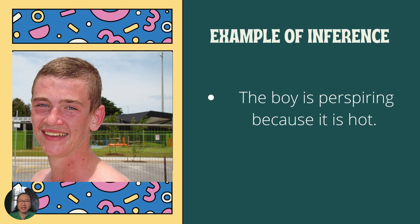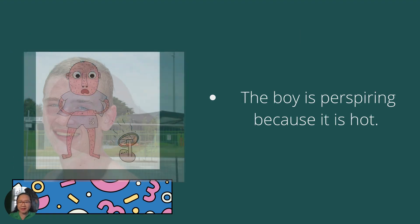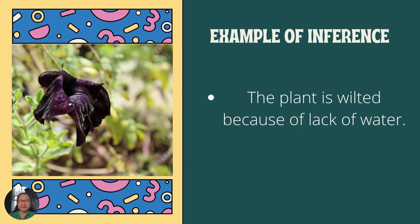Let's take a look at some examples. The boy is perspiring because it is hot — you observe the boy outdoors perspiring, and since it is a sunny day, you conclude it is hot because you know it is hot during a sunny day. Another example: you observe that the plant is wilted, so you conclude that it lacks water supply.